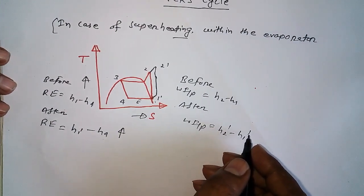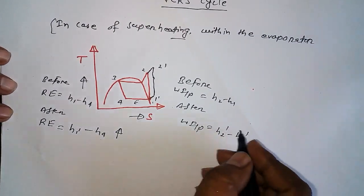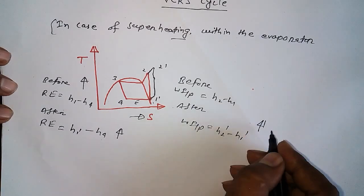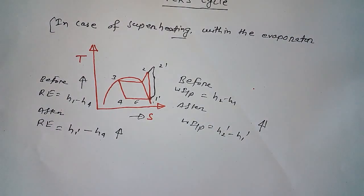Work input is h2 minus h1, and after it's h2 dash minus h1 dash. So what is happening here? Work input is also increasing.